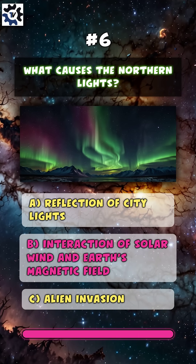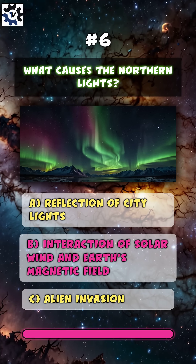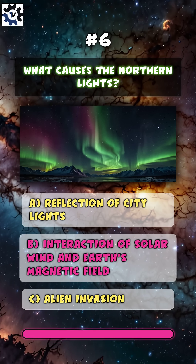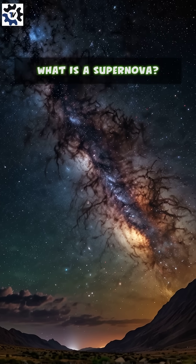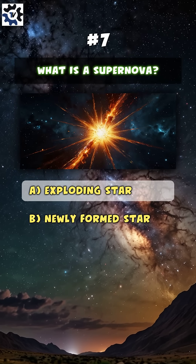What causes the northern lights? B. Interaction of solar wind and Earth's magnetic field.